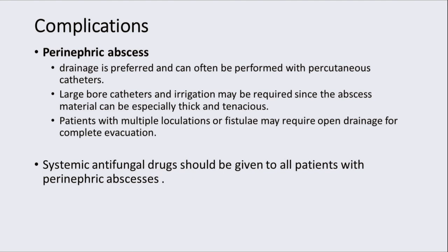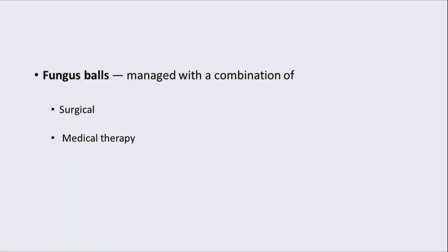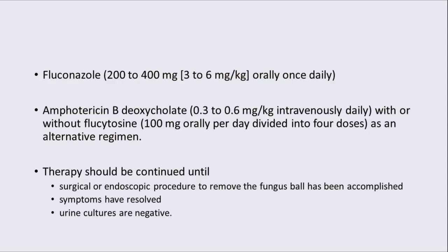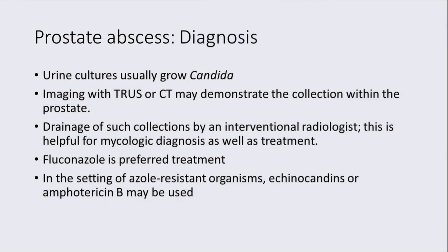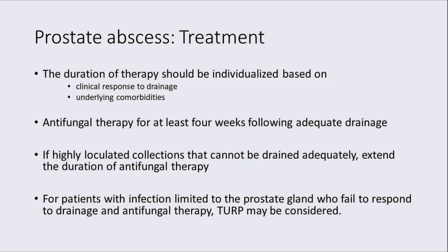Perinephric abscesses should be treated by percutaneous nephrostomy; percutaneous drainage with a large-bore catheter and irrigation may be required, alongside systemic antifungal therapy. For fungal ball, surgical removal is needed along with fluconazole or amphotericin B as systemic therapy. Prostatic abscesses may occur in older diabetic males and may present only with urinary retention. Diagnosis is usually made by rectal ultrasound. They need drainage by an interventional radiologist, and fluconazole should be started for a duration of at least four weeks.